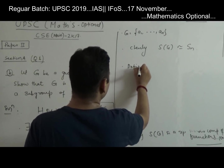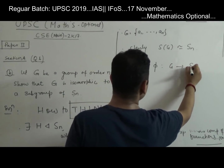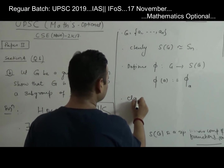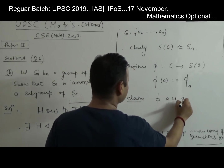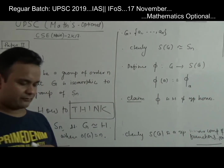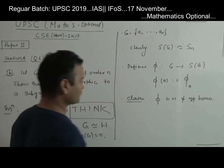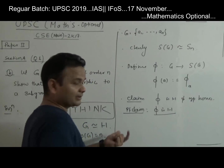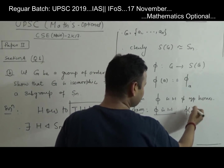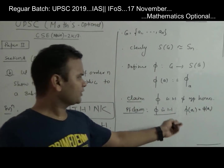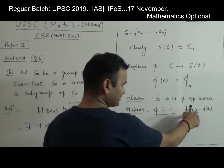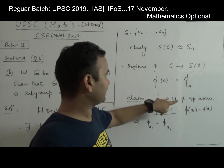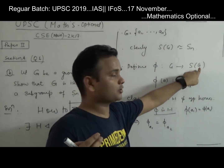Now define the mapping Φ: G → S_G by Φ(a) = φ_a. Claim: Φ is one-one and a group homomorphism. Why is Φ one-one? Suppose Φ(a₁) = Φ(a₂). This means φ_{a₁} = φ_{a₂}, where these two elements lie in S_G. Since φ_a is a one-one function, φ_{a₁} and φ_{a₂} are elements of S_G.